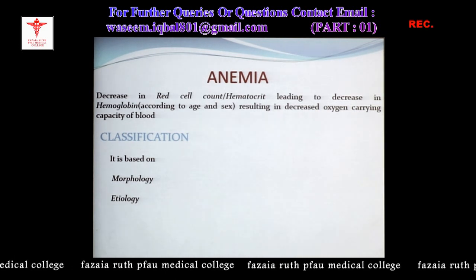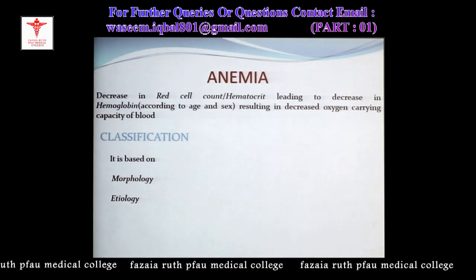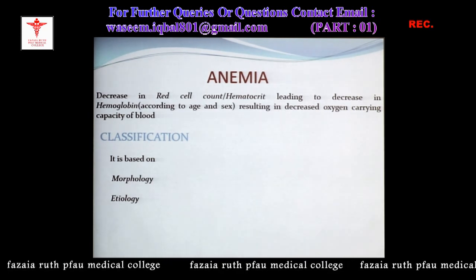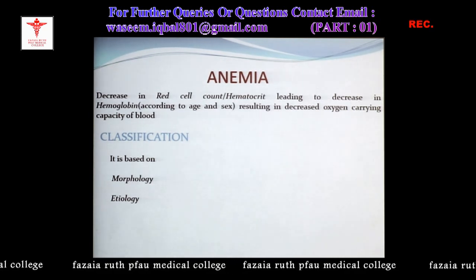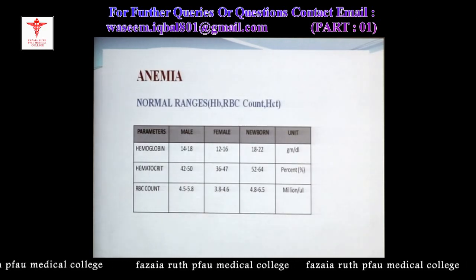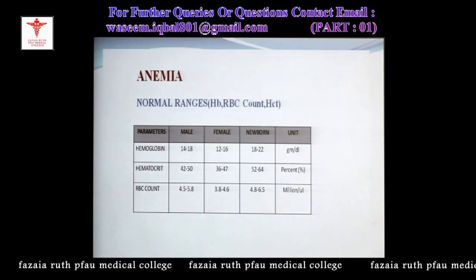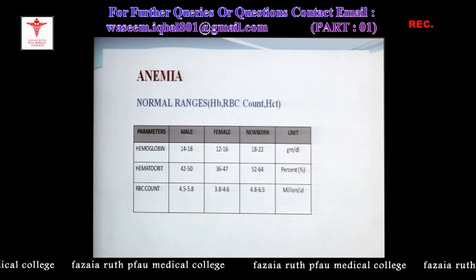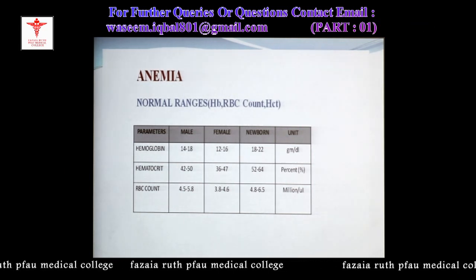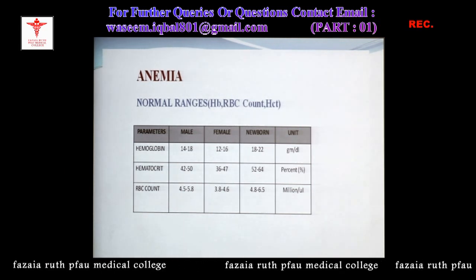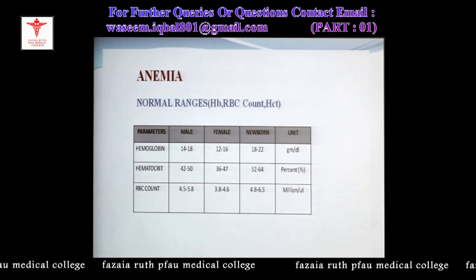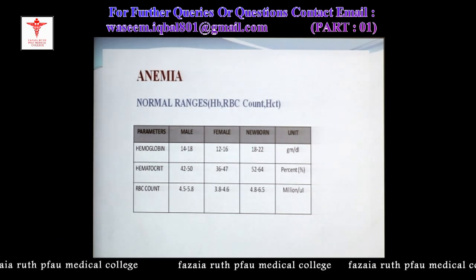The classification of anemia is of two types: one is based on red blood cell morphology and the other is based on the underlying mechanisms. Before we elaborate the classification, we need to know the normal levels of hemoglobin, red cell count, and hematocrit according to adult male, female, and age — especially in the newborn.